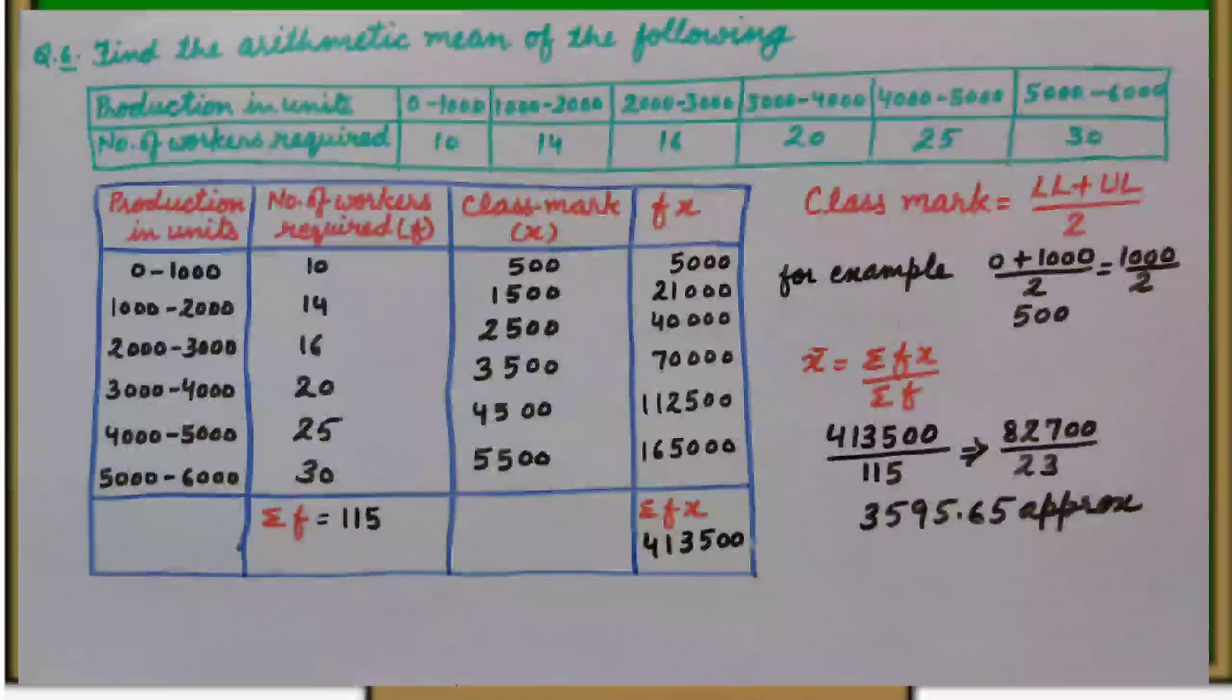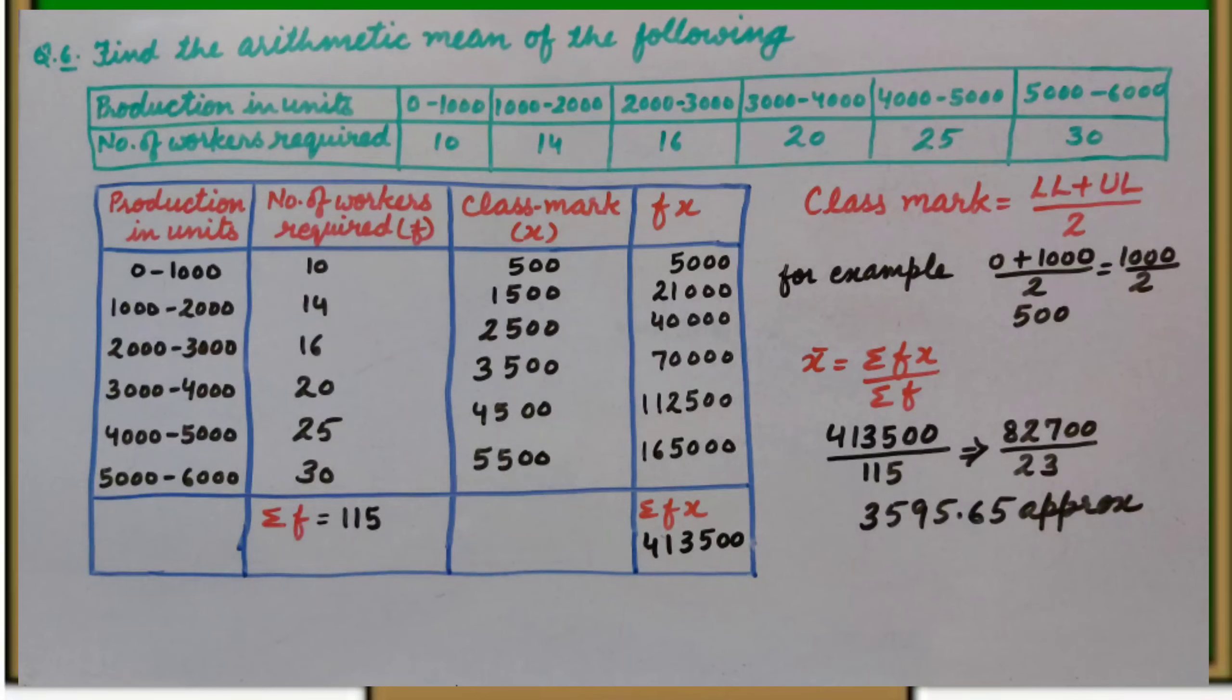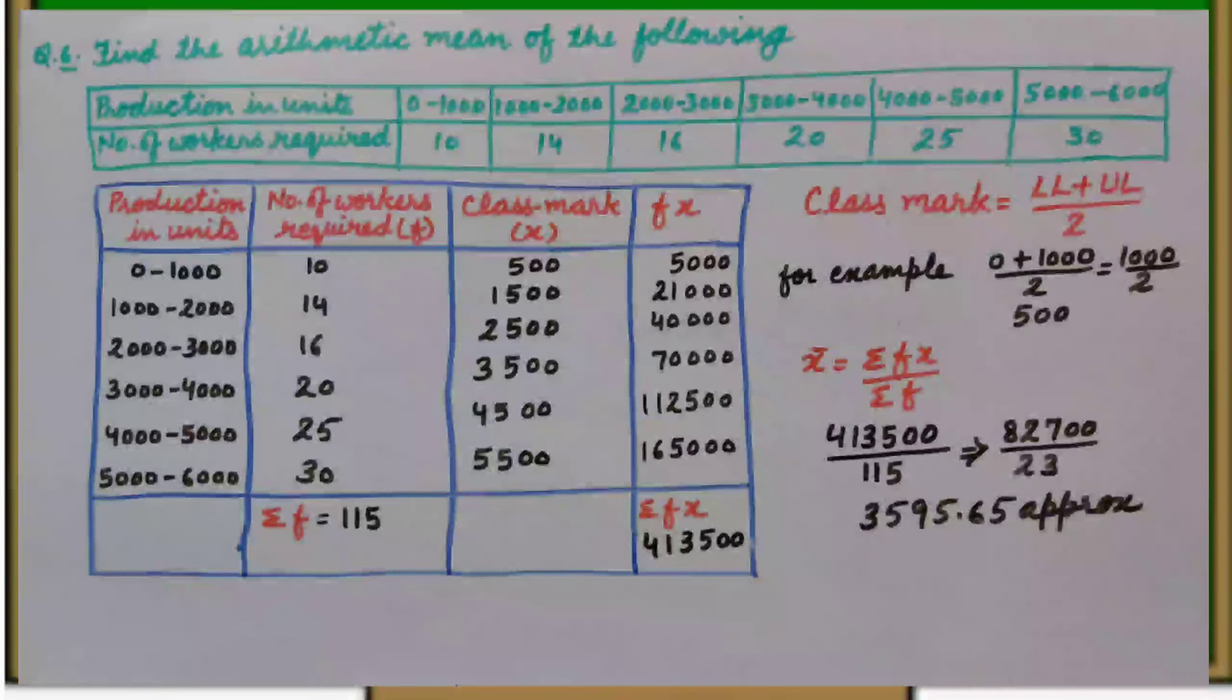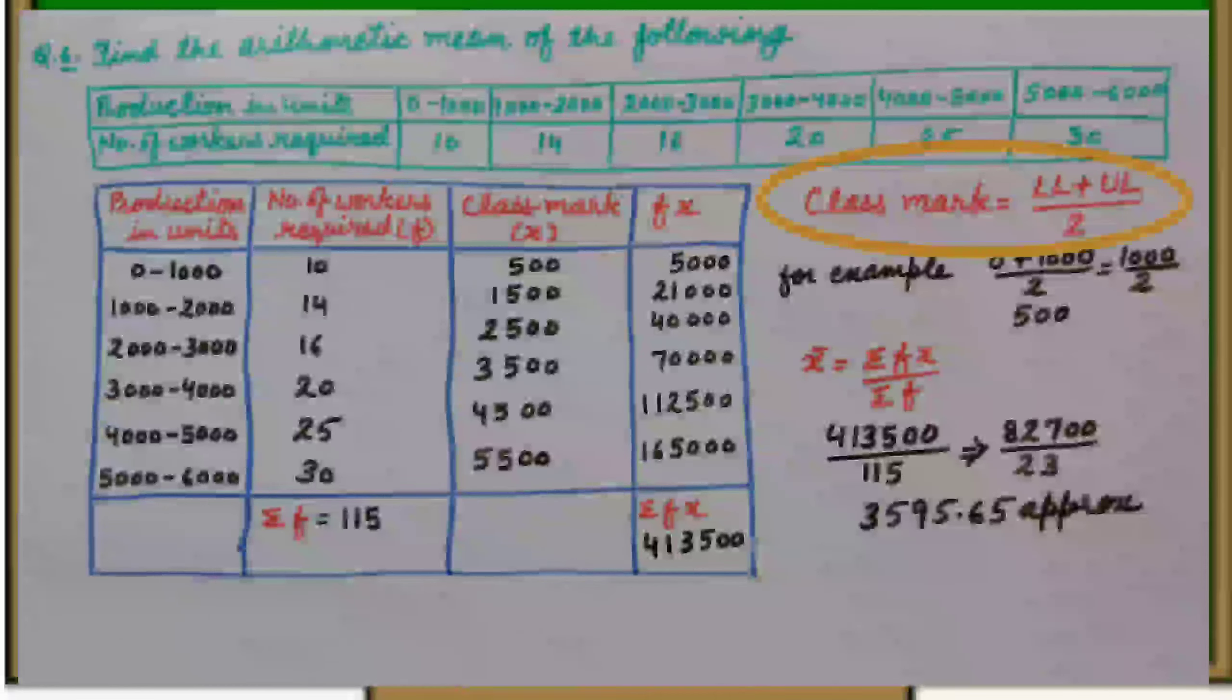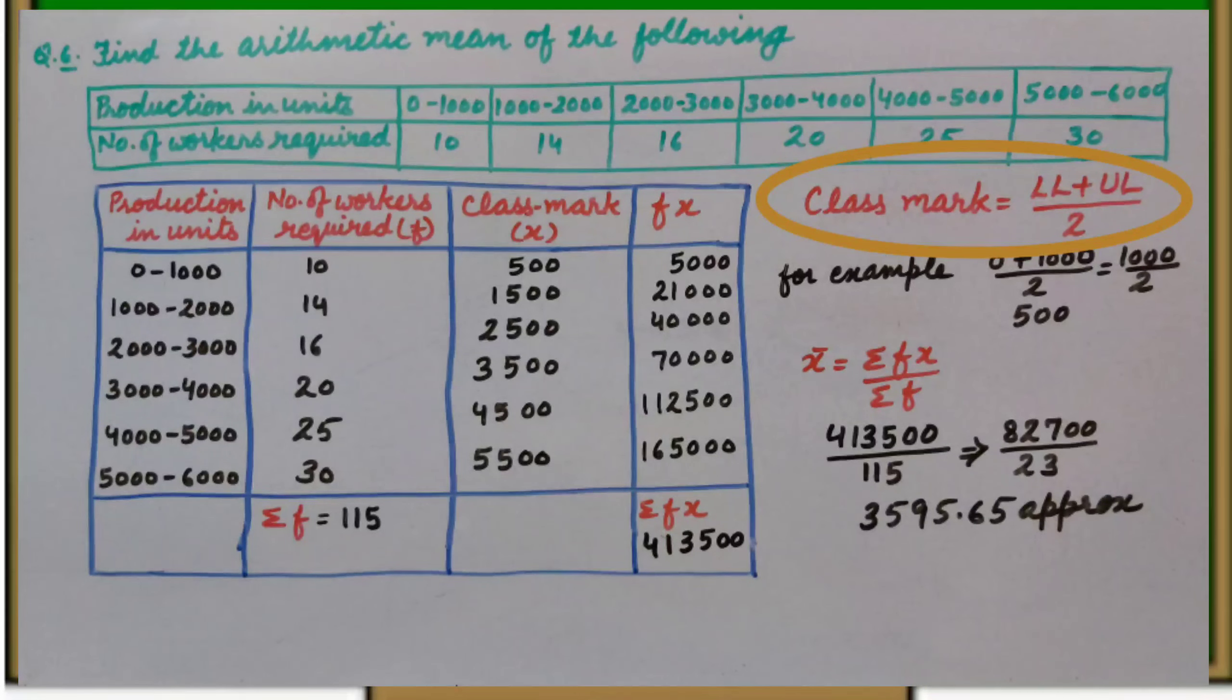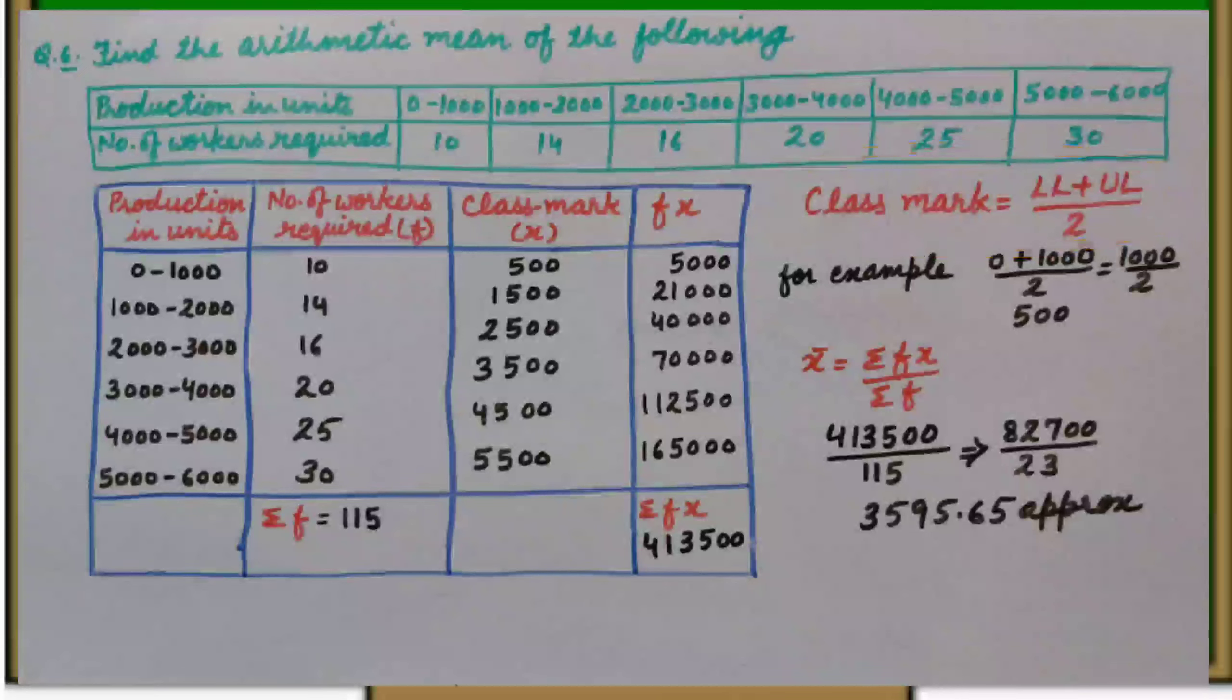It means grouped frequency table is given. In answer, first of all, we will write production in units and then frequency. When grouped frequency table is given, we have to find class mark of each class using the formula lower limit plus upper limit upon 2.